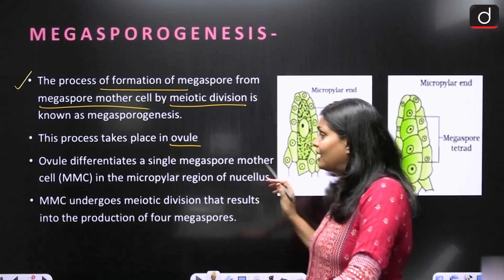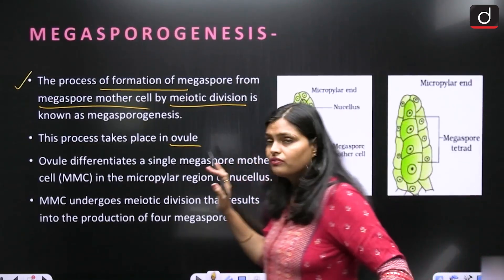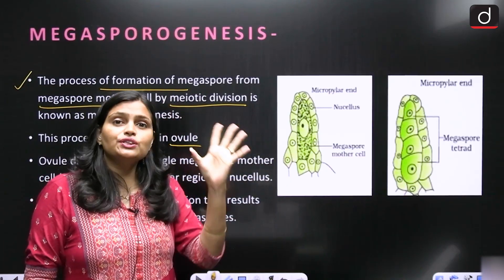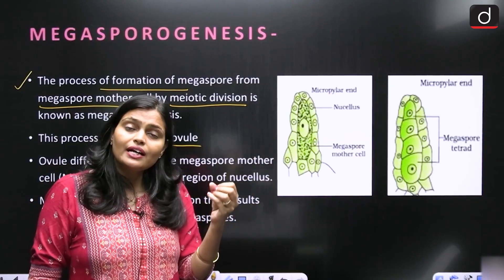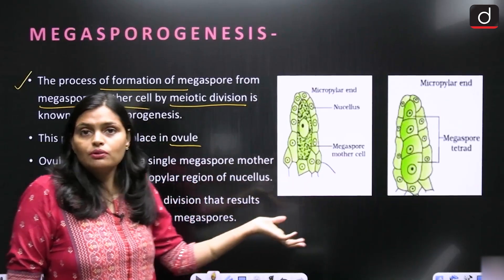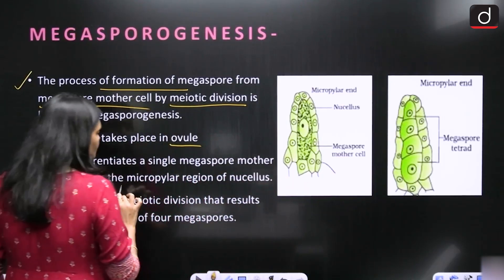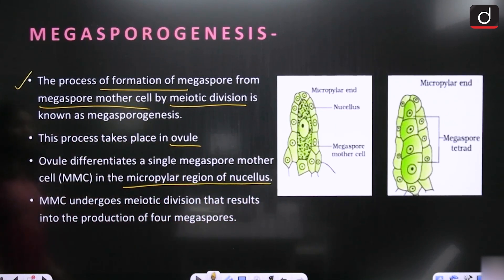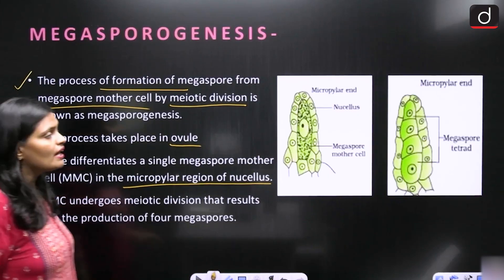The Ovule structure differentiates into the Megaspore mother cell. The Ovule is converted into the Megaspore mother cell in the micropylar region of the Nucellus. The Megaspore mother cell (MMC) then undergoes meiotic division, resulting in the production of 4 Megaspores.